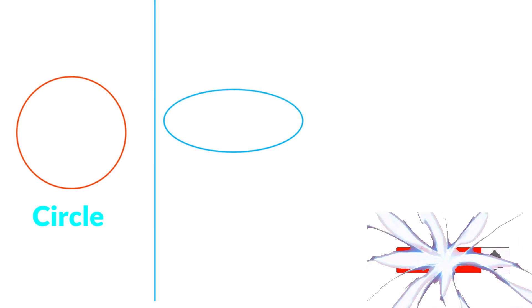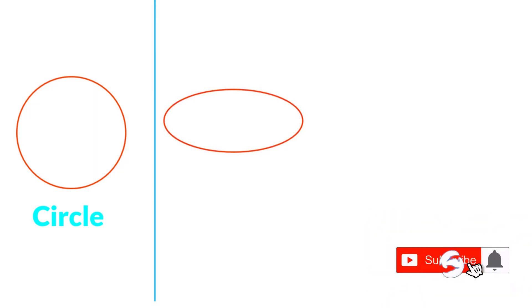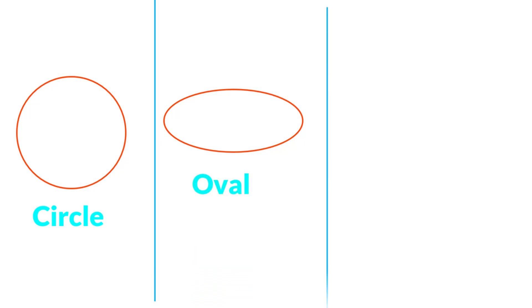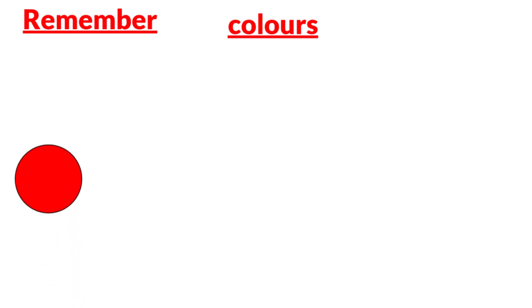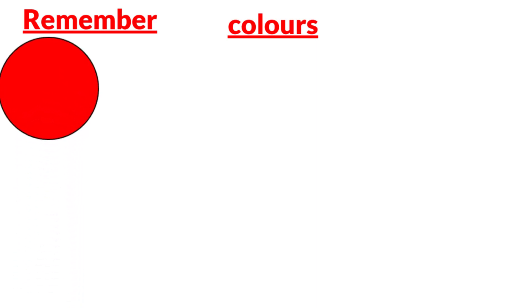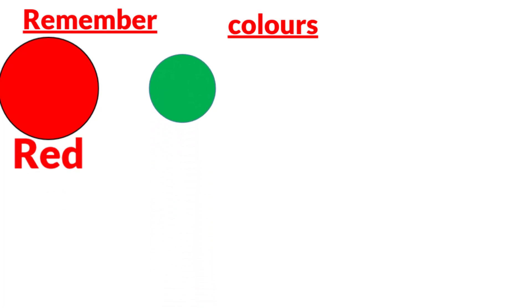Next guys: oval. And star. So: first circle, second oval, third star. Remember guys, colors! The first color is red. Second is green.